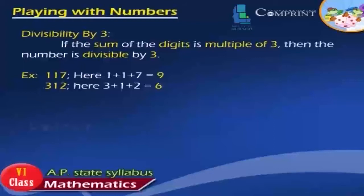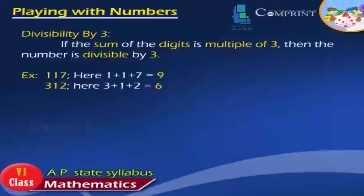Divisibility by 3: If the sum of the digits is a multiple of 3, then the number is divisible by 3. Example: 117 — here 1+1+7 = 9, which is a multiple of 3, so 117 is divisible by 3. Similarly, 312 — here 3+1+2 = 6, which is a multiple of 3, so 312 is divisible by 3.